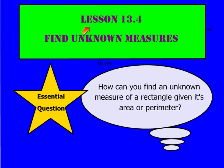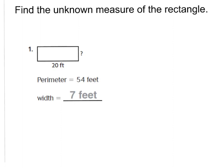Hi there, boys and girls. Welcome to Lesson 13.4, Find Unknown Measures. This will be on page 253 in your GoMath book. Our essential question for tonight is, how can you find an unknown measure of a rectangle given its area or perimeter? Please go ahead and turn in your GoMath book to page 253, and let's begin.